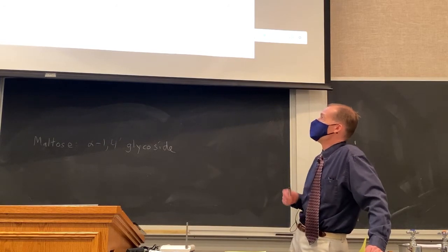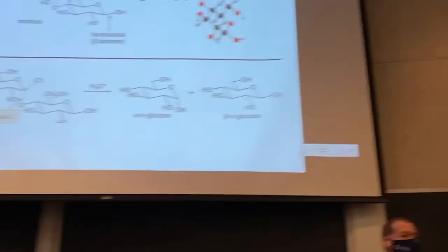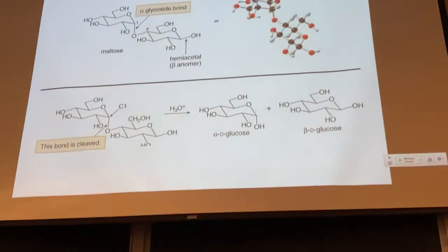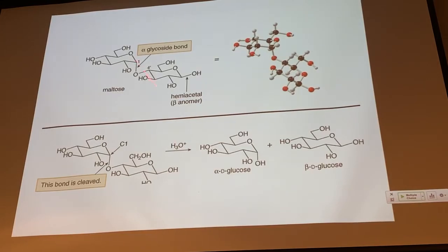Is maltose a reducing sugar? Yes, maltose is a reducing sugar. Even though it doesn't have a hemiacetal on one side, it does have one on the other. If it has a hemiacetal and it's an aldose, it's a reducing sugar — it's capable of being oxidized by Tollens' reagent or Benedict's reagent.